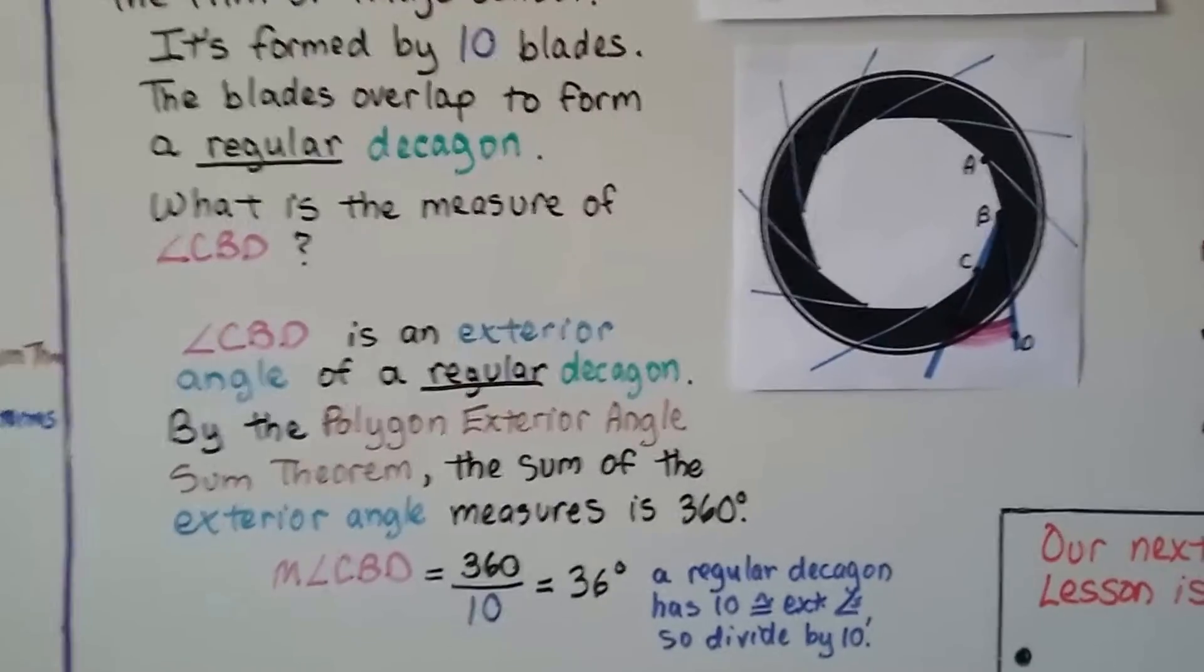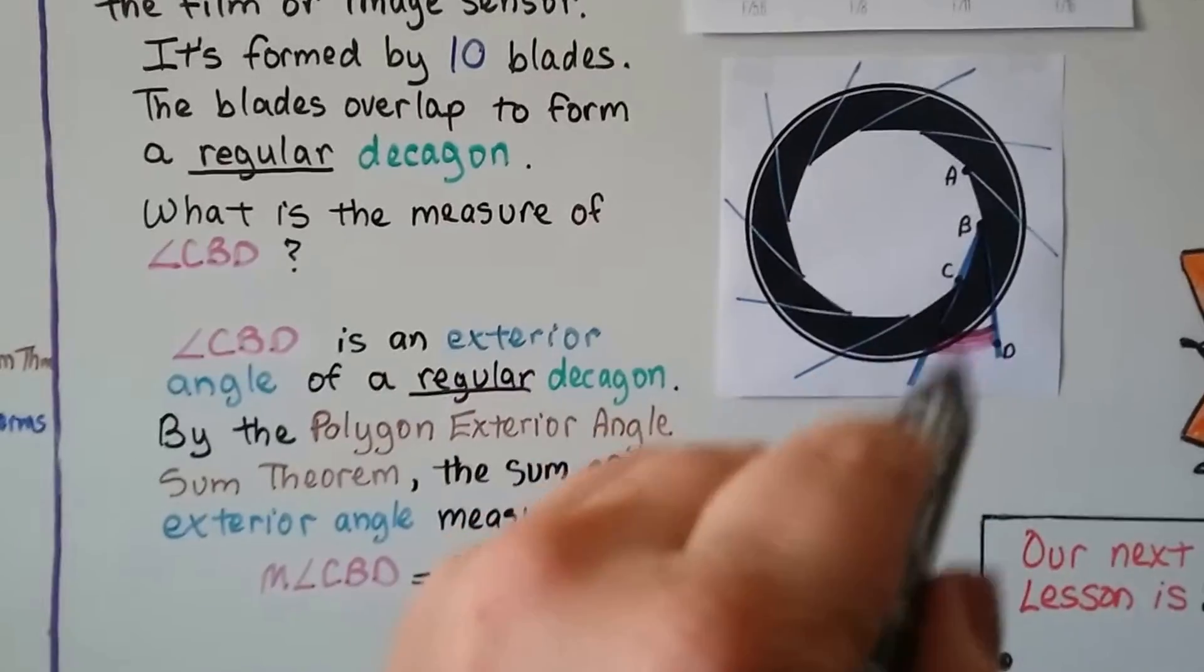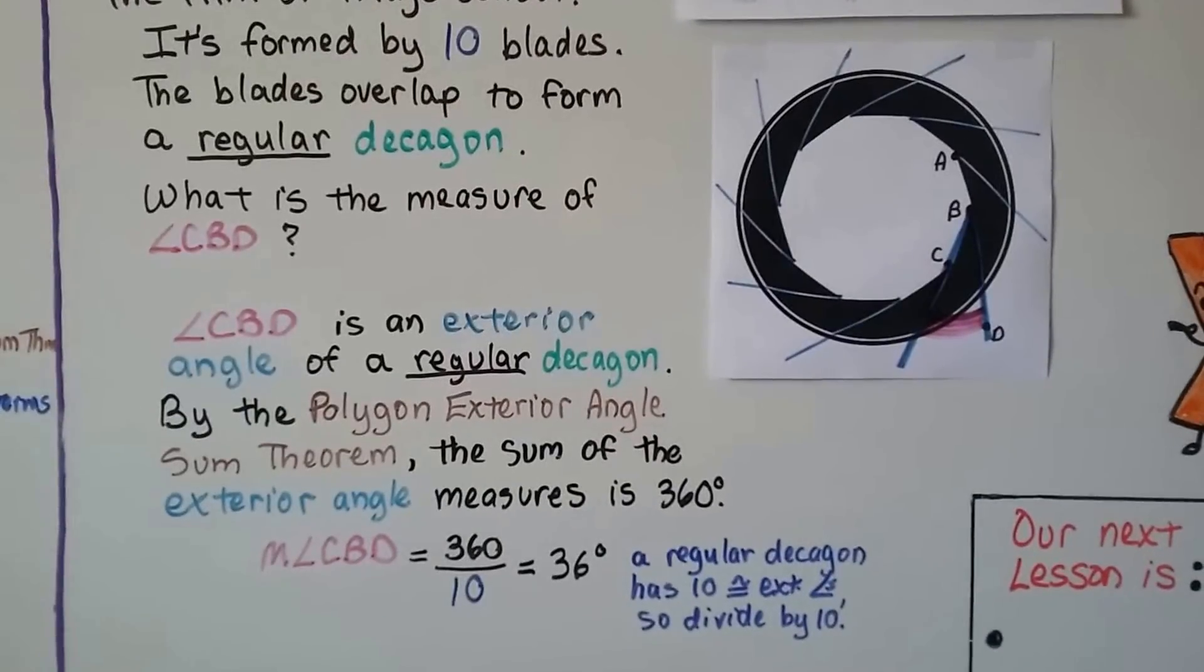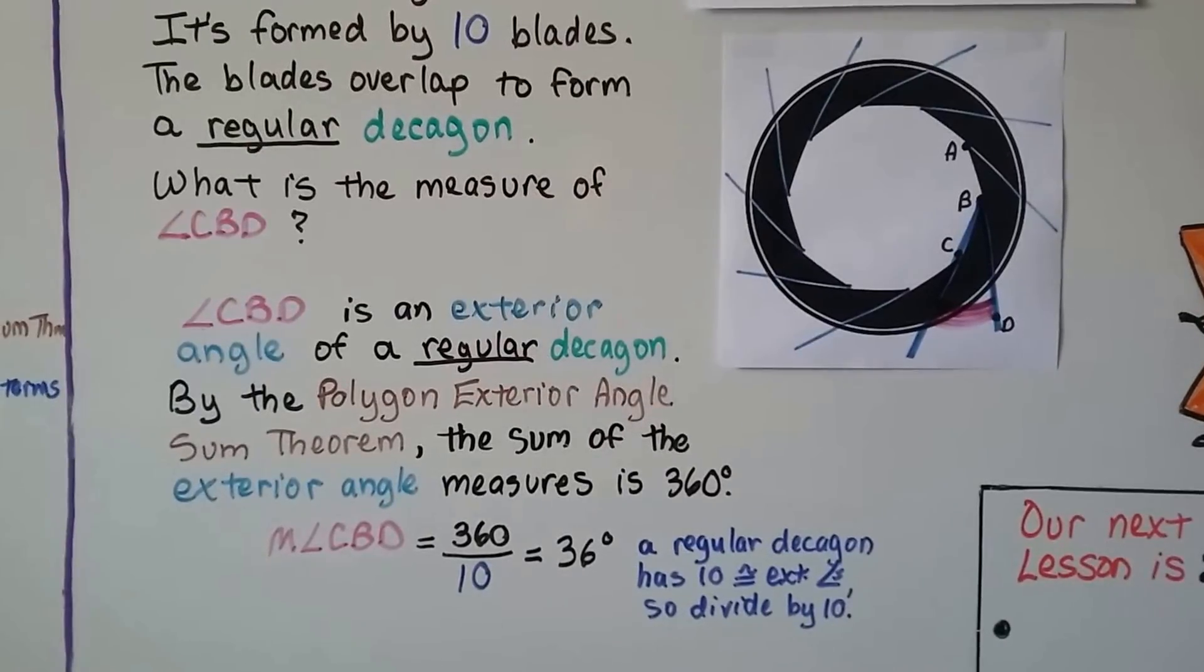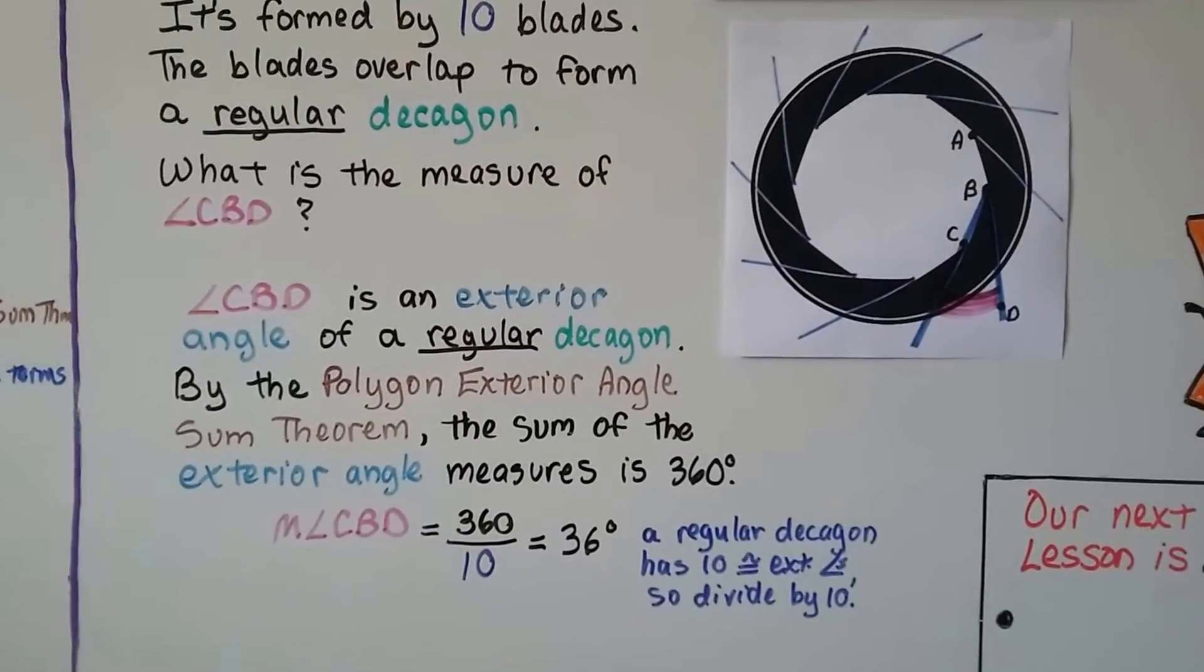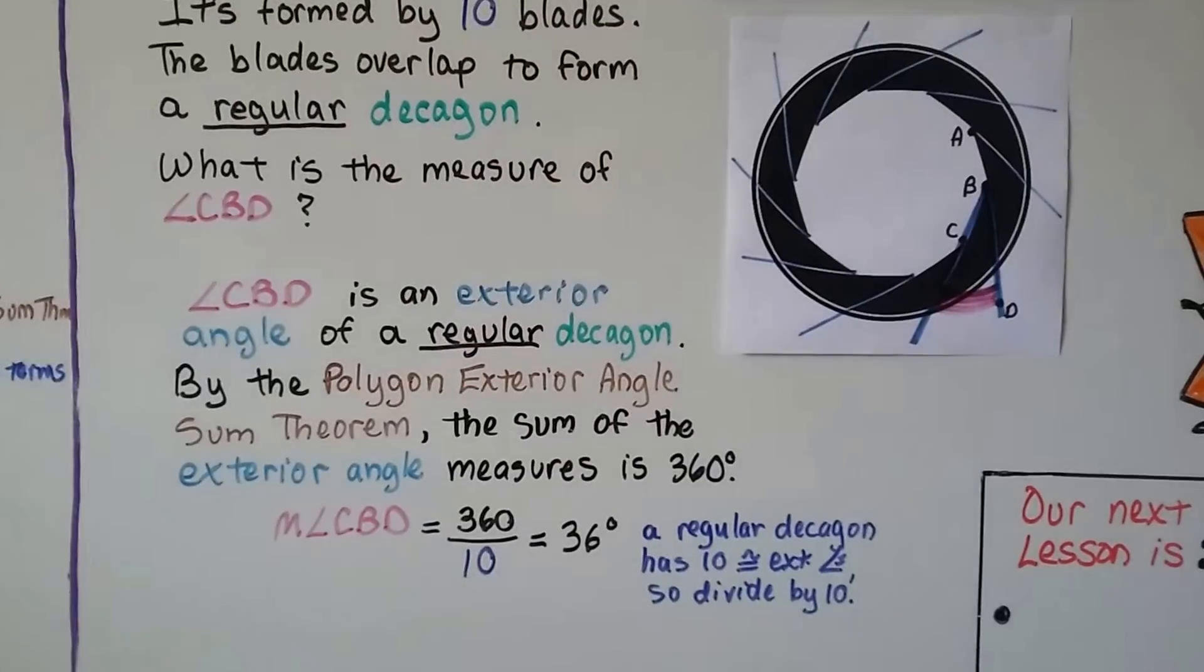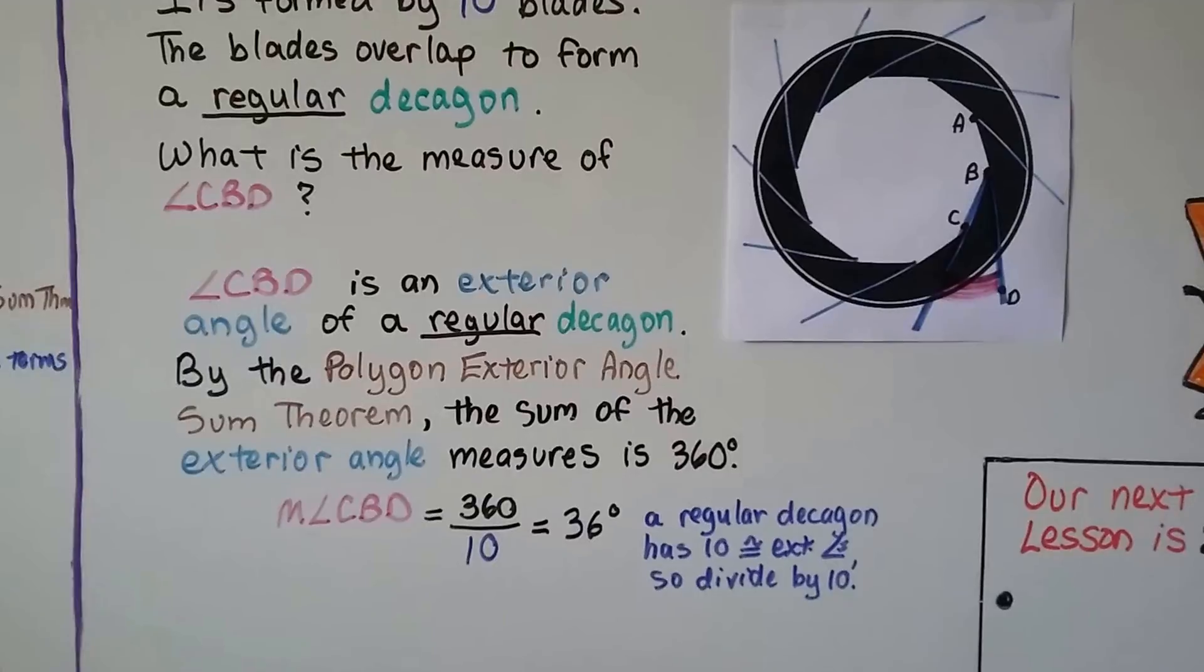Well, angle CBD is an exterior angle of the regular decagon. This is the interior, so that would be the exterior. And by the polygon exterior angle sum theorem, the sum of the exterior angle measures is 360 degrees. So the measure of angle CBD is 360 divided by 10. That equals 36 degrees. A regular decagon has 10 congruent exterior angles, so we divide by 10.